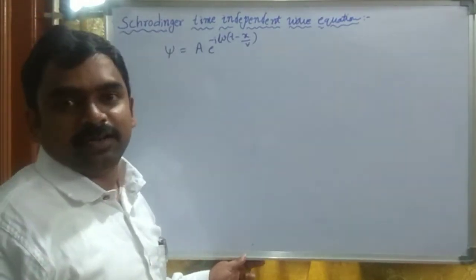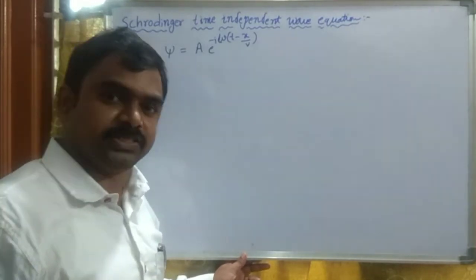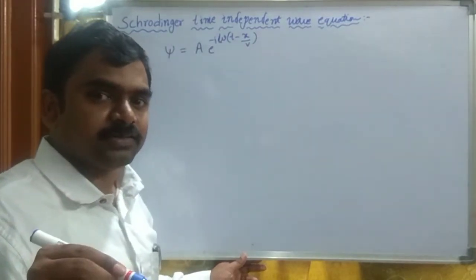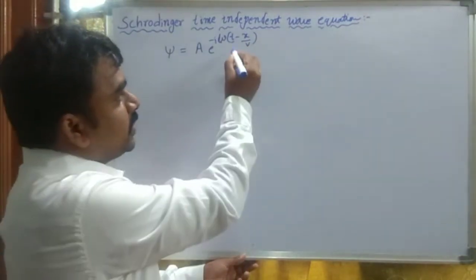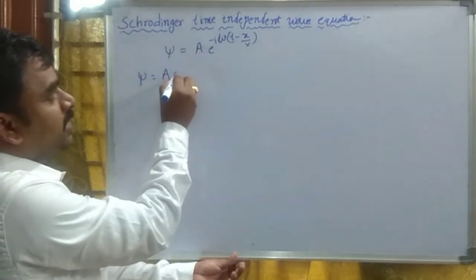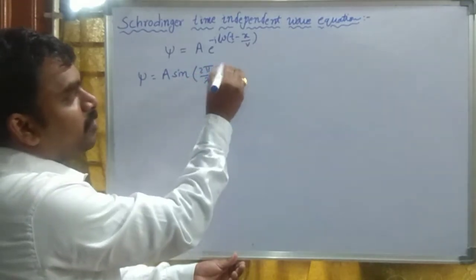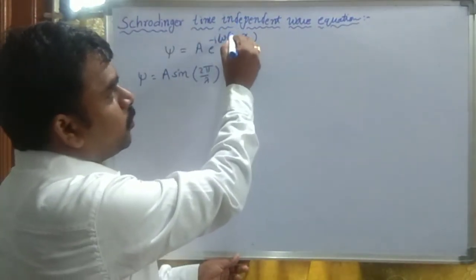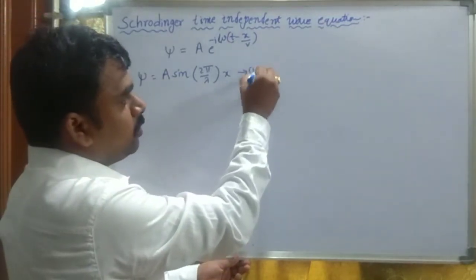For most particles, their potential energy depends only on position — that means the potential energy does not depend upon time. Thus, the modified wave function can be taken as ψ equals A·sin(2π/λ · x). This is the modified wave function we use to derive the Schrödinger time-independent equation — we do not need the time factor. This is called Equation 1.